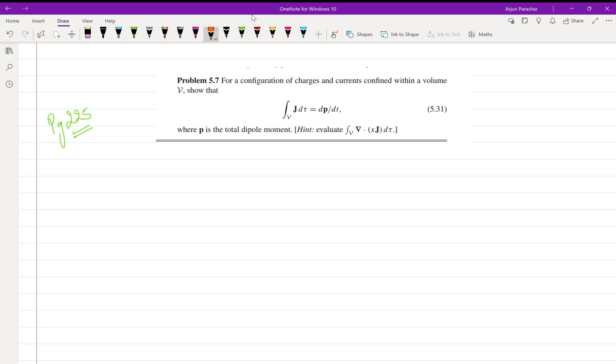Hello everyone, welcome back. Now let us start problem number 5.7 on page number 225, which says for a configuration of charges and currents confined within a volume, j tau is equal to dp by dt, where p is the total dipole moment.